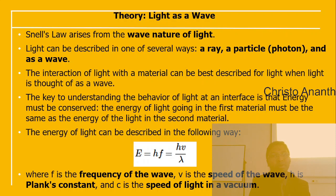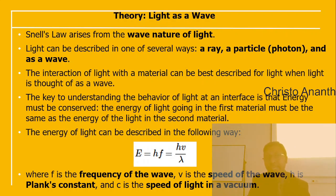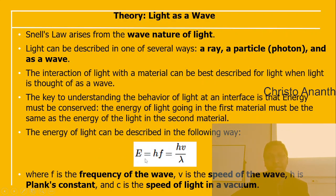Snell's law arises from the wave nature of light. Light can be described as a ray, a particle (photon), or a wave. The interaction of light with material is best described by treating light as a wave. At the interface, energy must be conserved — the energy of light in the first material must equal the energy in the second. Energy of light is E = h × f, where h is Planck's constant and f is frequency.